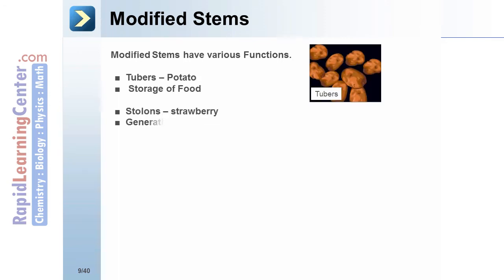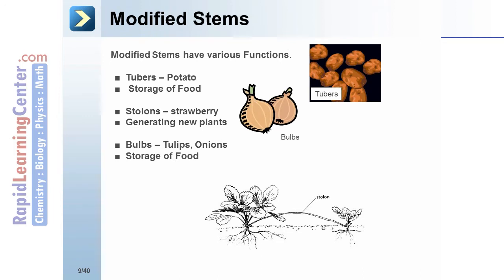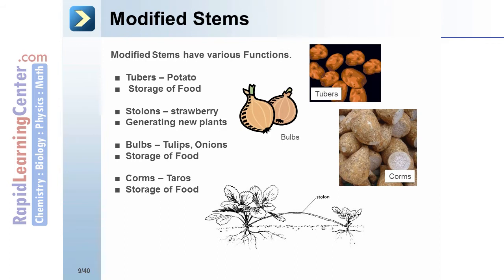Modified stem types include stolons, which allow strawberries to generate new plants; bulbs, seen in tulips and onions, for storage of food; and corms, also used for storage of food.